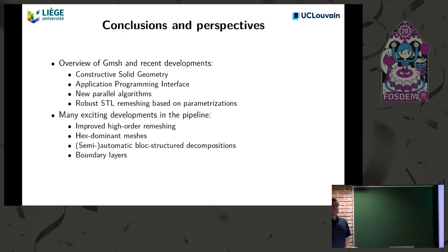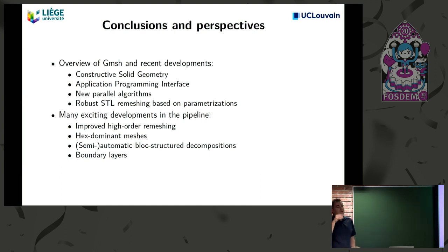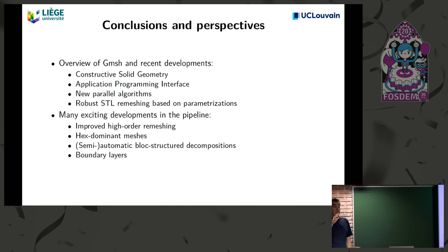Q&A: On the C++ version upgrade — Gmesh 5 will move to C++11. On comparison with other meshers like NetGen and TetGen: TetGen only does 3D, whereas Gmesh does 1D, 2D, and 3D. The speed of the new Gmesh algorithm is competitive, especially with parallelism.